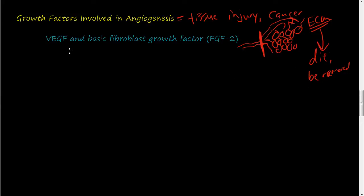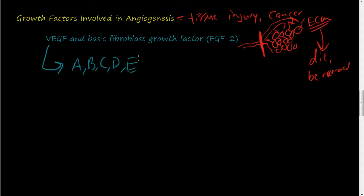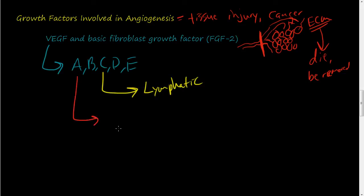VEGF — vascular endothelial growth factor — and basic fibroblast growth factor, FGF2, are the two primary growth factors in the process of angiogenesis. These vascular endothelial growth factors have versions A, B, C, D, E, and there are about 20 forms of this. They all do different things. Version C is for lymphatic vessels, and VEGF-A is just called VEGF by default — the original VEGF.